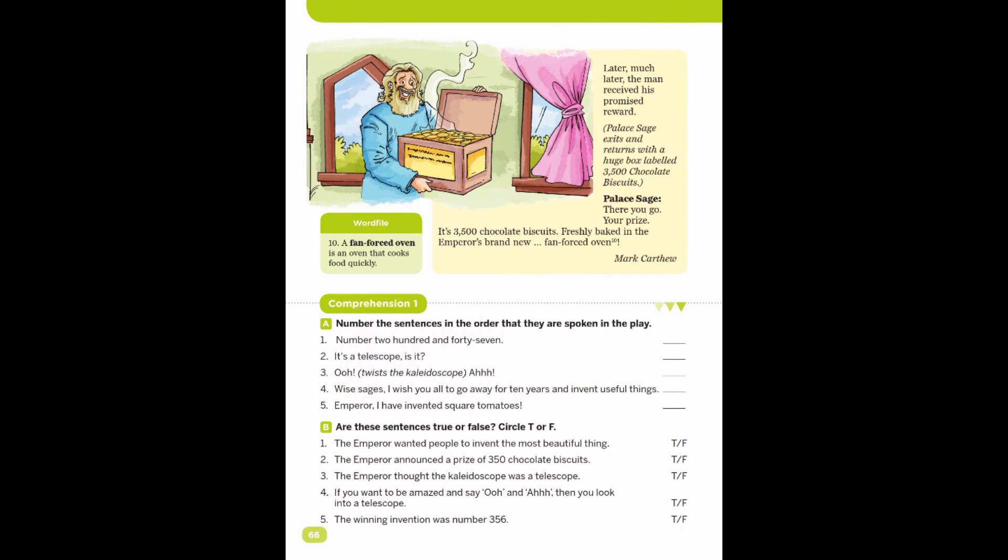Later, much later, the man received his promised reward. Palace Sage exits and returns with a huge box labeled 3,500 chocolate biscuits. Palace Sage: There you go, your prize. It's 3,500 chocolate biscuits, freshly baked in the emperor's brand new fan-forced oven.